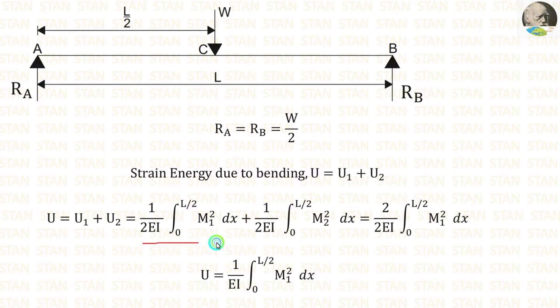For U1 and U2, let us make the integrations. We know the formula for strain energy: 1 by 2EI into integration of M square dx. Here we are having two parts, one before the point load and one after the point load.